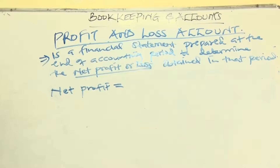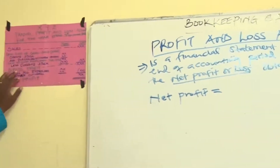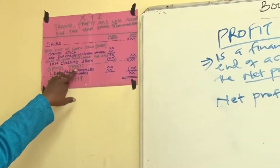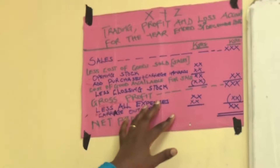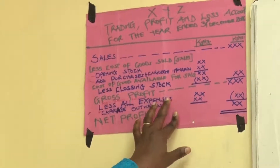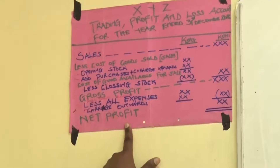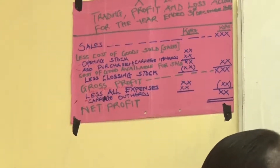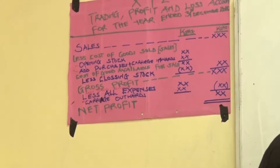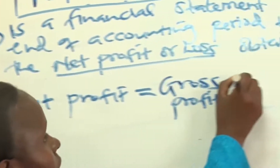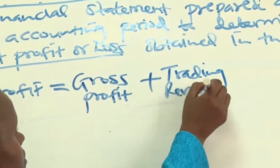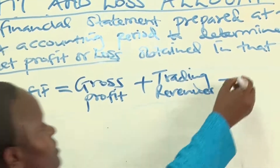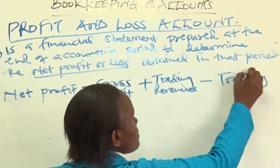From the trading account, we continue into the profit and loss account. After getting the gross profit, you add the trading revenues, then you raise all the trading expenses. After raising all the trading expenses, the resulting figure is the net profit. So net profit equals gross profit, plus trading revenues, minus trading expenses.